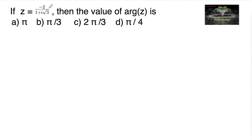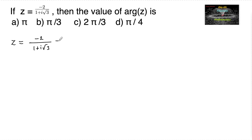If z is equal to minus 2 upon 1 plus i root 3, then find the value of argument of z. We can write this as minus 2 into 1 upon 1 plus i root 3.